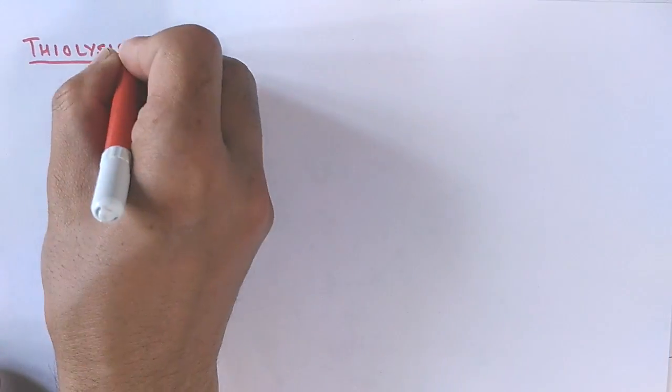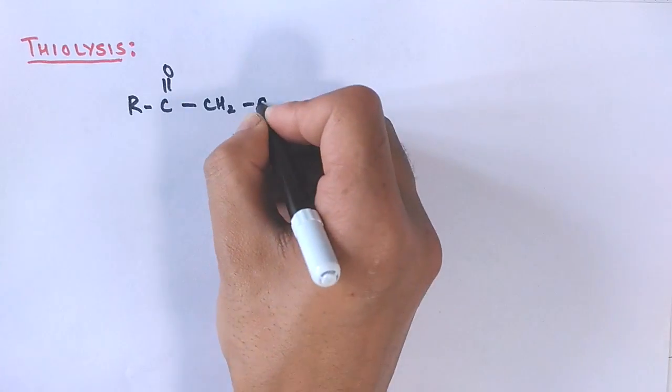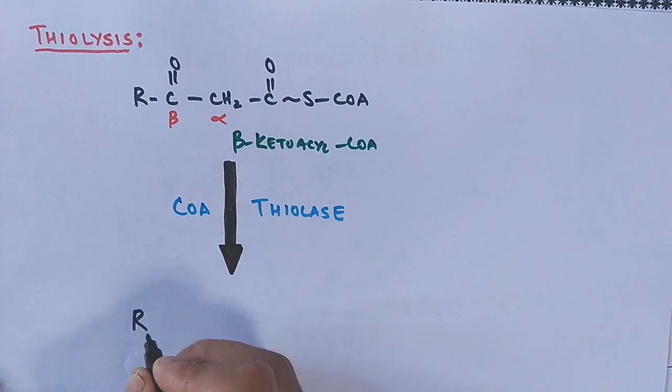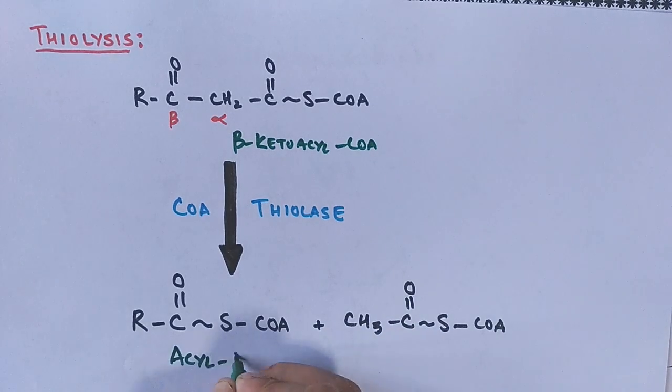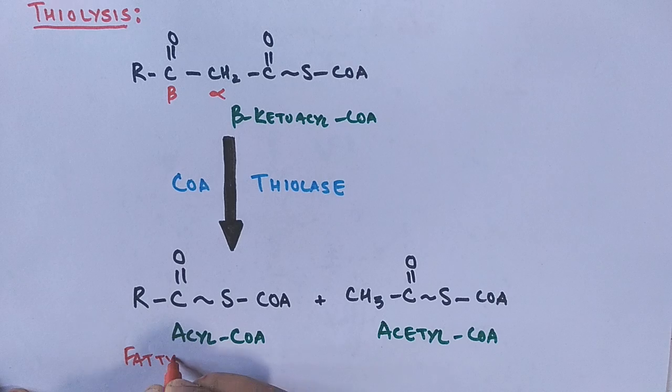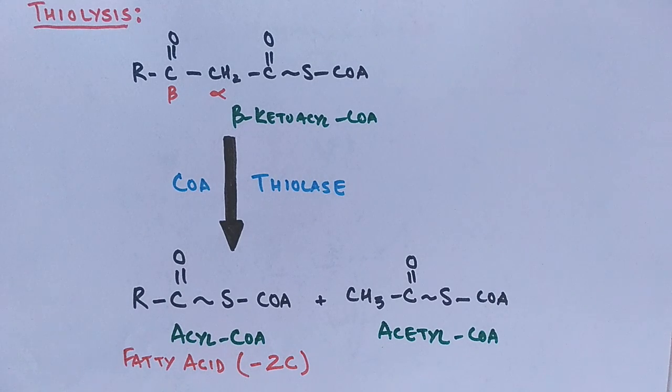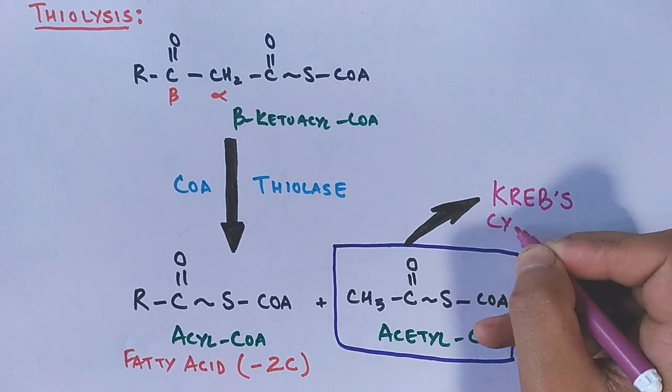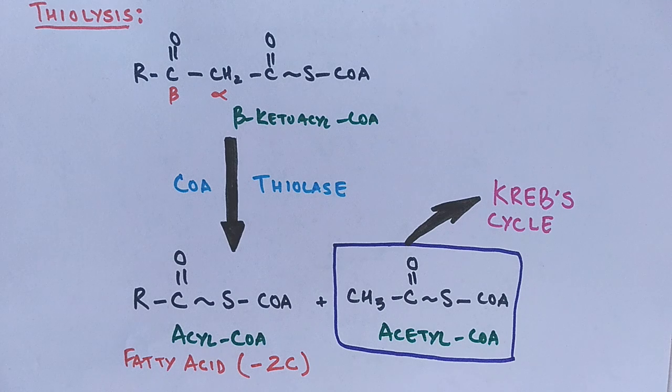Finally, the last step is thiolysis. Thiolysis is a reaction with a thiol that cleaves one compound into two. Here, beta-ketoacyl-CoA is cleaved into two molecules. In the presence of the thiolase enzyme and CoA, we get one fatty acyl-CoA and one acetyl-CoA. The series of reactions has yielded a fatty acyl-CoA that has been shortened by two carbons and one molecule of acetyl-CoA. Acetyl-CoA participates in many biochemical reactions. Its main function is to deliver the acetyl group to the citric acid cycle, or Krebs cycle, to be oxidized for energy production.